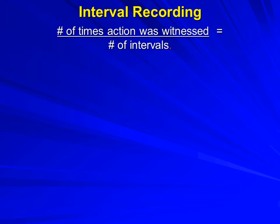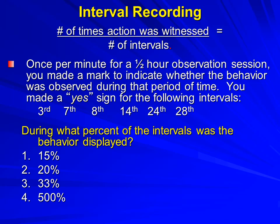Let's think back to interval recording. It notes whether the focus learner displayed the target behavior for all of the time — whole interval recording — or part of the time — partial interval recording. In interval recording we look at the number of times the action was witnessed and divide it by the number of intervals. Here's your problem: once a minute for a half-hour observation you make a yes or no mark, and you made a yes mark six times — at the third, seventh, eighth, fourteenth, twenty-fourth, and twenty-eighth intervals. What percent of the intervals was the behavior displayed?